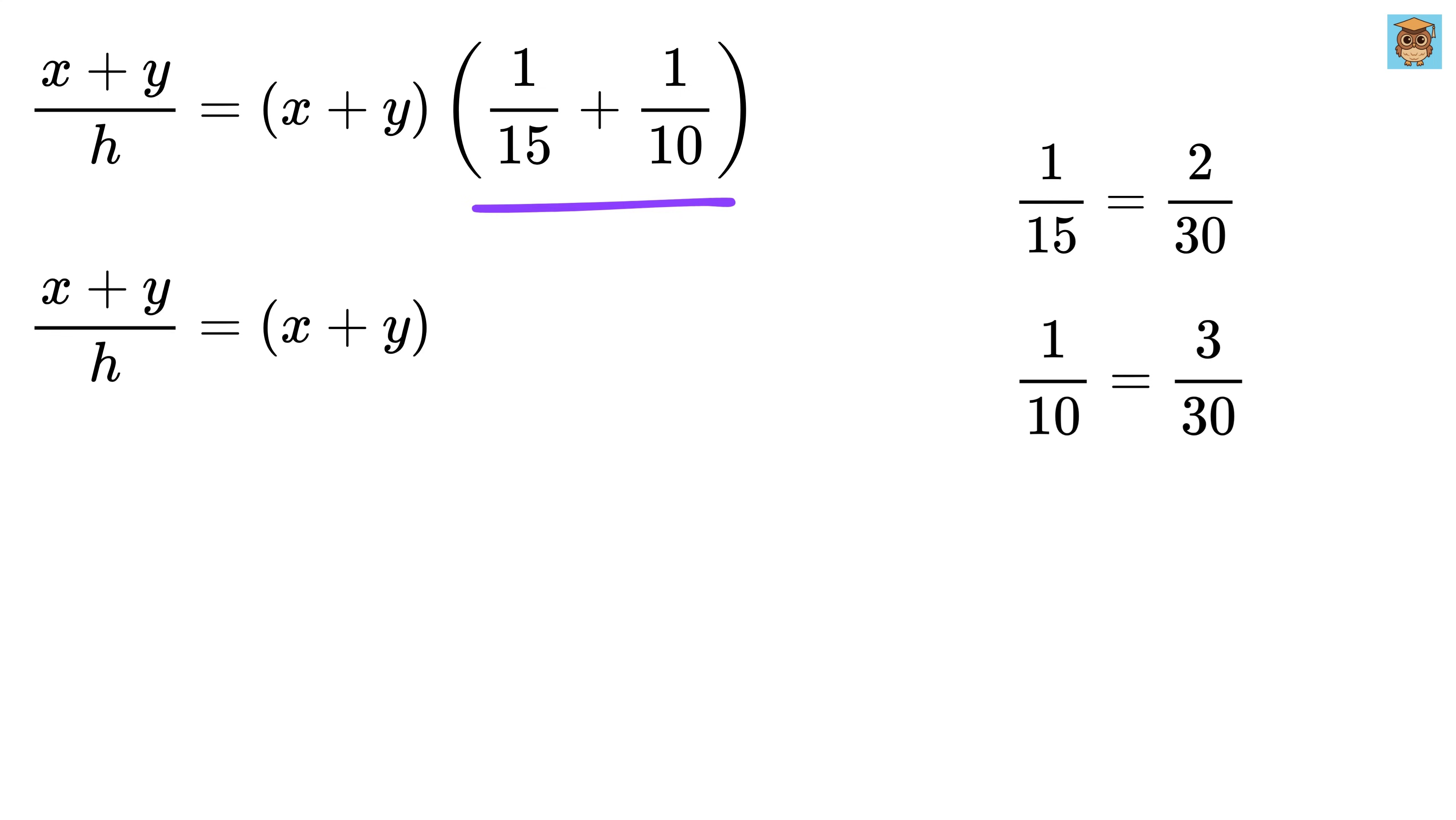So, 1 over 15 plus 1 over 10 is equal to 2 over 30 plus 3 over 30, which gives 5 over 30, and that simplifies to 1 over 6.